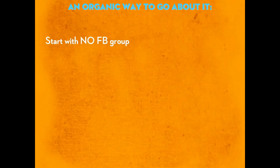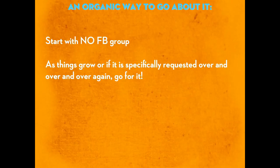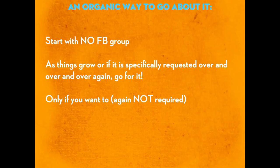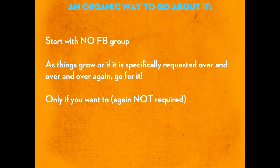An organic way to go about this — and feel free to steal this strategy — is to start with no Facebook group with your products and programs. As things grow, or it's specifically requested over and over again, go for it. For Create Awesome Online Courses, I didn't have a Facebook group for the first six, seven, eight months the program was out. Then I started getting a lot of requests — people wanted to interact and see what others were doing with their courses. So you can do the organic route: don't launch with it, but add it later on. And again, only if you want to — there's no rule that's going to make or break your course if you don't do this.